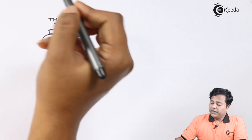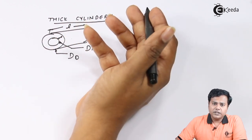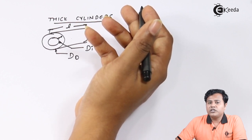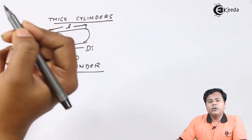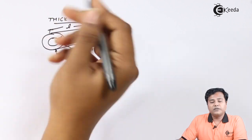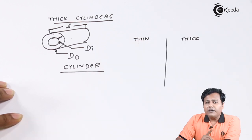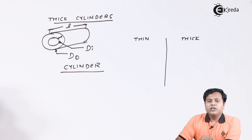As the thickness increases, it becomes a thick cylinder. But technically it is different from a thin cylinder, and that differentiation we are going to look at now. In thin cylinders, the radial stresses are negligible. So let us divide this particular diagram into three parts to understand the types of stresses.